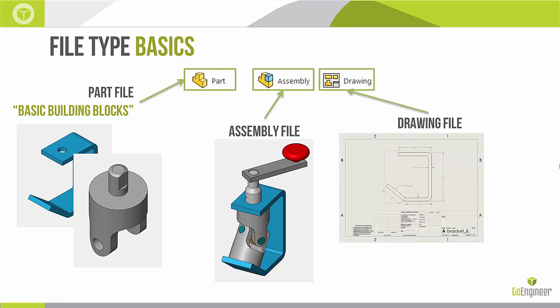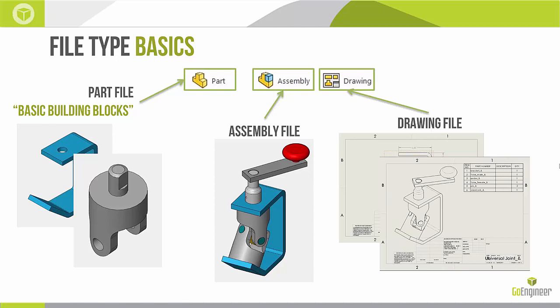Lastly, we have drawing files. The drawing file takes our basic building blocks — our part files — and represents them on a 2D drawing, allowing us to dimension them and create manufacturing information. We also have drawing files for assemblies, where we can represent bills of materials, assembly instructions, and things like that.